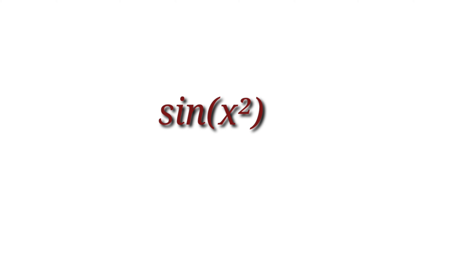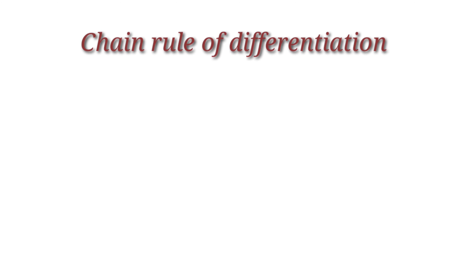Suppose we have a function sin(x²). In appearance we can see sine and x². We know the derivative of sin θ is cos θ, and the derivative of x² is 2x. But most students face difficulty differentiating sin(x²) because it is not a sum, not a difference, not a product, and not a quotient. Here sin(x²) is a composition of two functions — sine and the polynomial x². So we can differentiate it by applying the chain rule of differentiation.